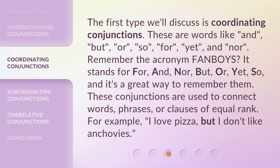The first type we'll discuss is coordinating conjunctions. These are words like and, but, or, so, for, yet, and nor. Remember the acronym FANBOYS?